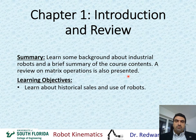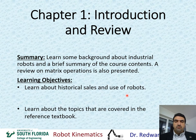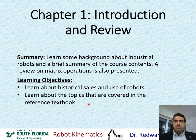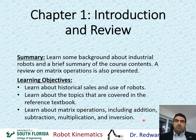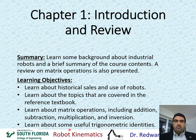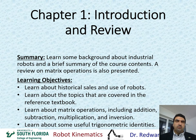The learning objectives for this chapter include: learning about the historical sales and use of robots throughout history; learning about the topics covered in the reference textbook — including chapters we will and won't cover; learning about matrix operations including addition, subtraction, multiplication, and inversion; and finally learning about useful trigonometric identities we'll be using throughout this course.